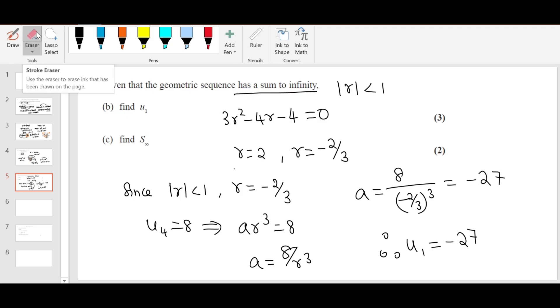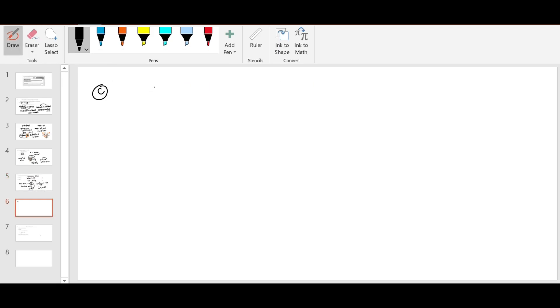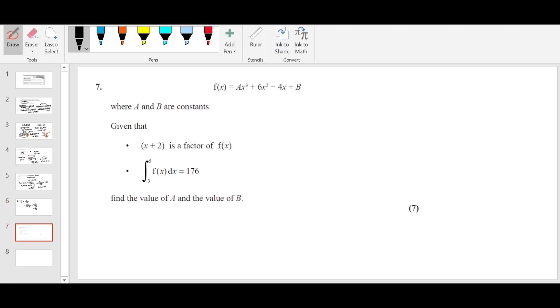Now part C finds sum to infinity. S infinity, the formula for sum to infinity is A over 1 minus R. We just calculated A and we know R is minus 2 over 3. So it's going to be minus 27 over 5 over 3, which is minus 81 over 5. That's the answer. It's a 7-mark question.